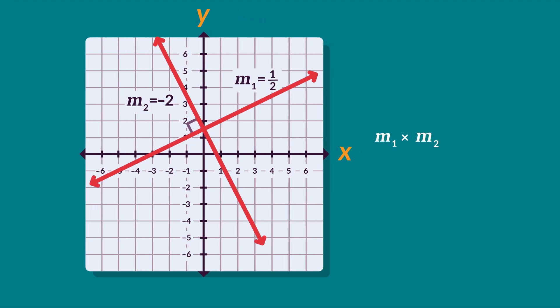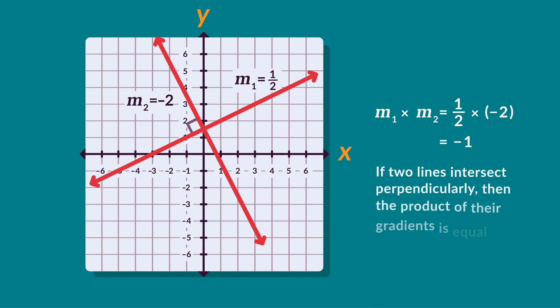If we multiply the gradients of the two graphs, M1 times M2, the result is negative 1. So the product of their gradients is negative 1. This property is true for any two perpendicular lines.